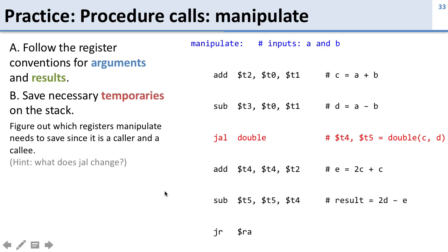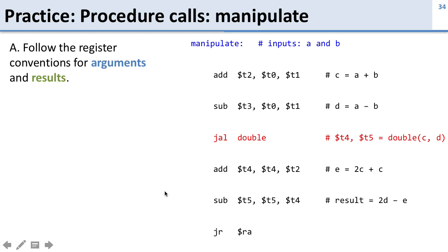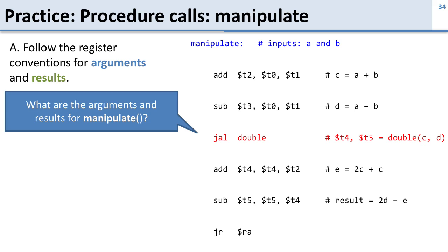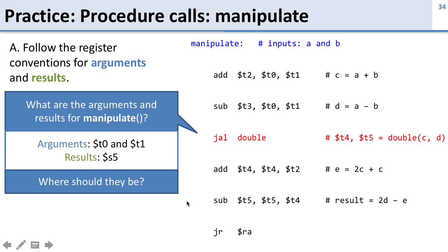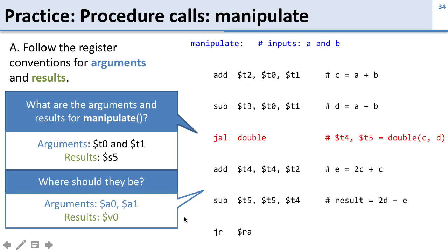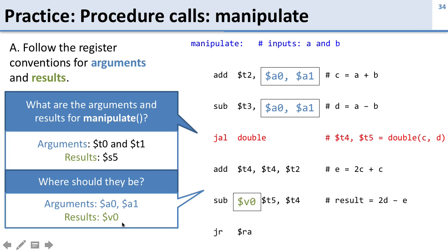Now let's look at manipulate and fix the arguments and results. For manipulate, its inputs a and b are currently taken in t0 and t1, and the result is returned in t5. The arguments should be in a0 and a1, and the results should be in v0. So we change the code to read inputs from a0 and a1 and put the result into v0. That's pretty straightforward.